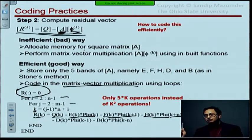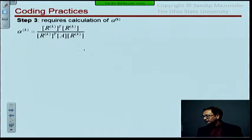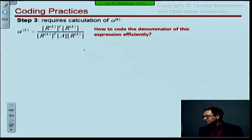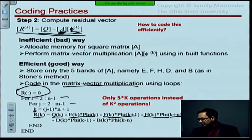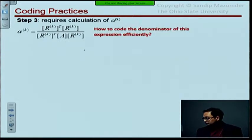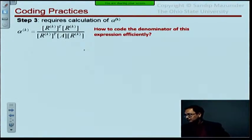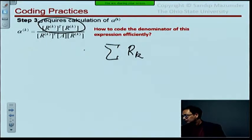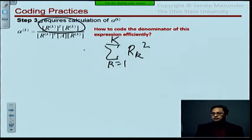Another one, step three requires calculation of alpha. That's that expression there. So first of all, numerator we have already calculated. So this guy we've already calculated the r. This guy here, calculating this is simply saying that it's the sum of r_k squared, that's all. So again you don't need to do any matrix operations, you don't need to take the r, make a transpose and then multiply. All you do is you square and add all the elements, that's all.